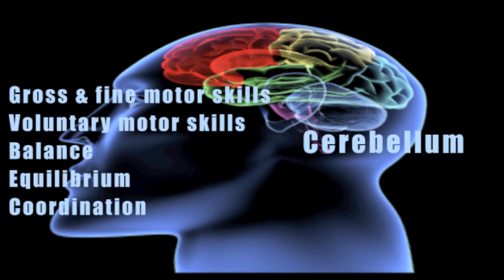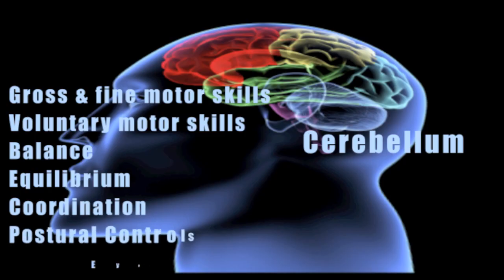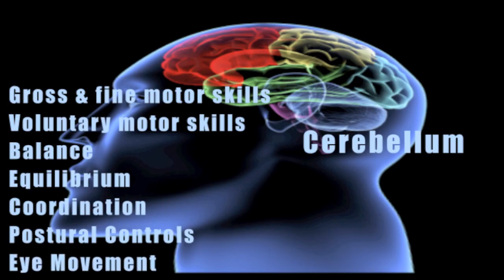The cerebellum also manages our balance and equilibrium — the ability to stand up and not fall over, to ride a skateboard, ride a bicycle, or go for a jog. It controls our postural control and our eye movements — moving our eyes back and forth, up and down — and utilizing our eyes to obtain visual information so it can be processed by our brain.